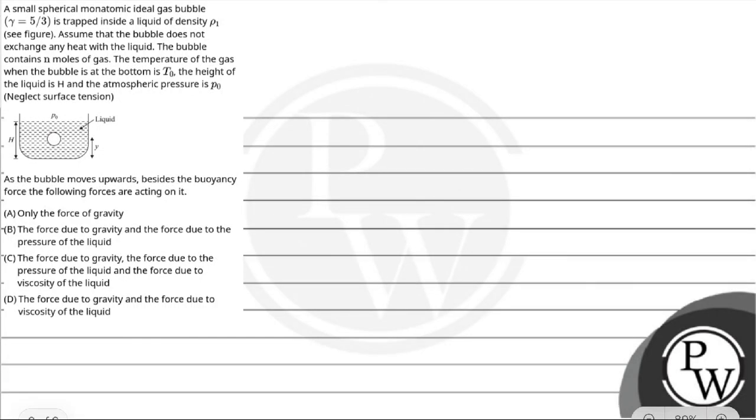Hello, let's see this question. A small spherical monoatomic ideal gas bubble with gamma equal to 5/3 is trapped inside a liquid of density rho. Assume the bubble does not exchange heat with the liquid. The bubble contains n moles of gas. The temperature of the gas when the bubble is at the bottom is T0. The height of the liquid is H and the atmospheric pressure is P0. Neglect surface tension.